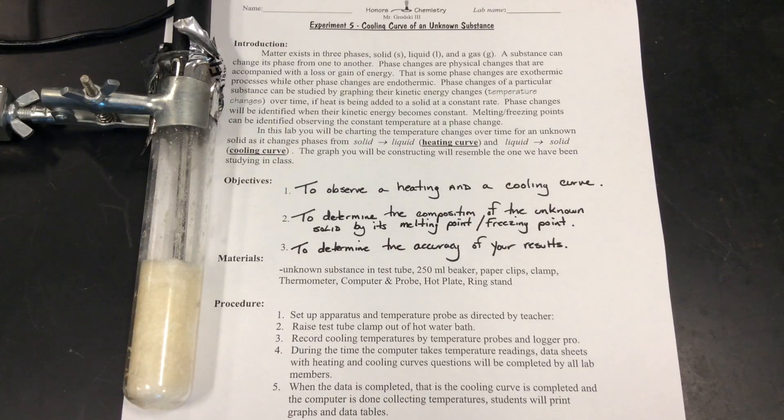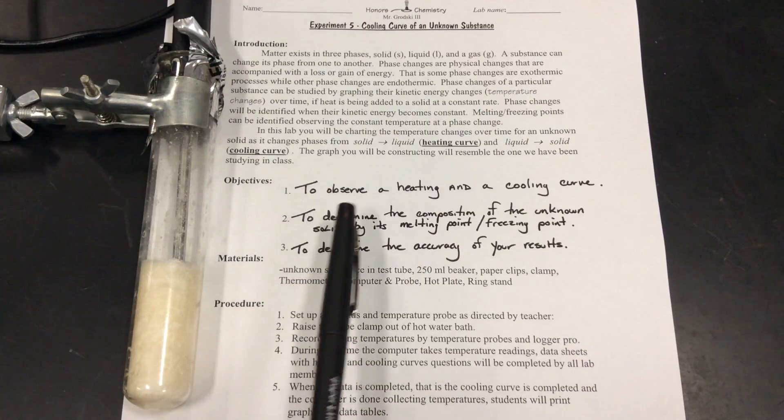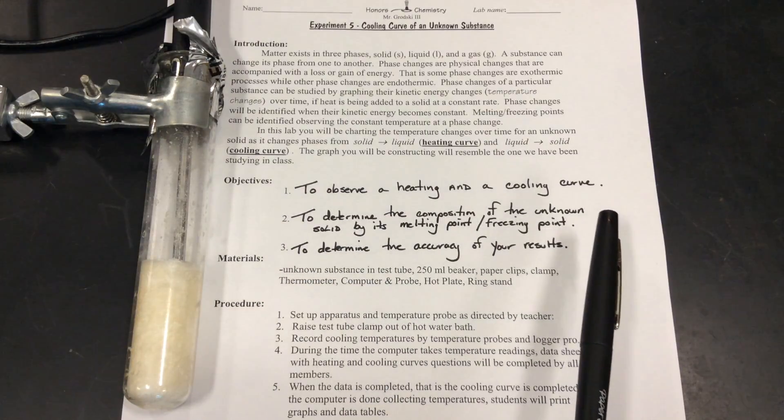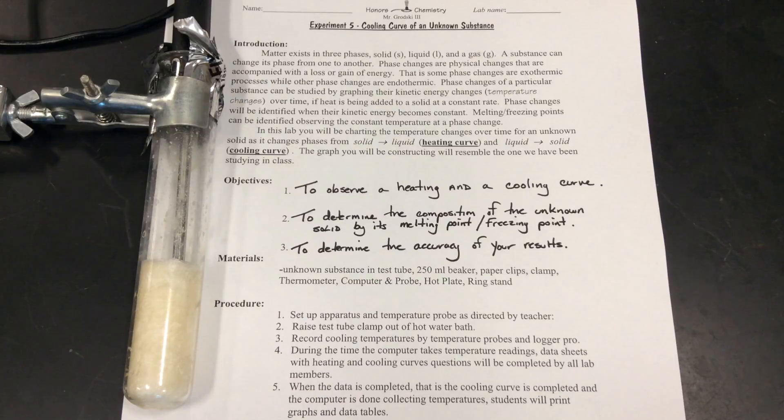If you notice, the first objective is to observe a heating and cooling curve. We're going to take it from a solid to a liquid, pull it out of the hot water bath, and then we're going to go from a liquid to a solid. We're going to skip the gas phase. As we study heating and cooling curves, we're not going to have a gas phase or a phase change beyond that.